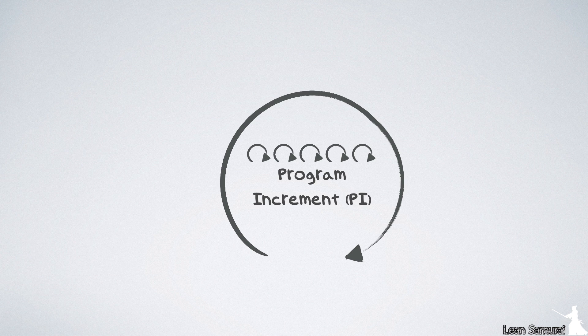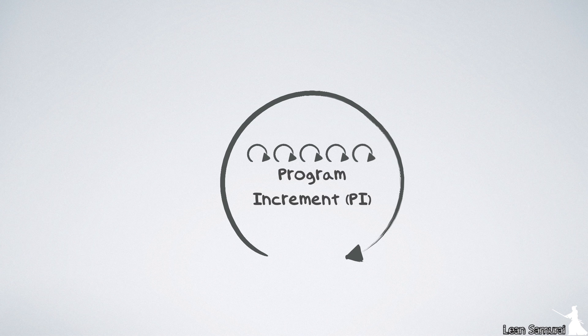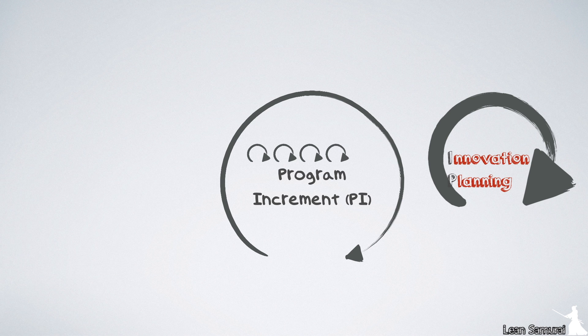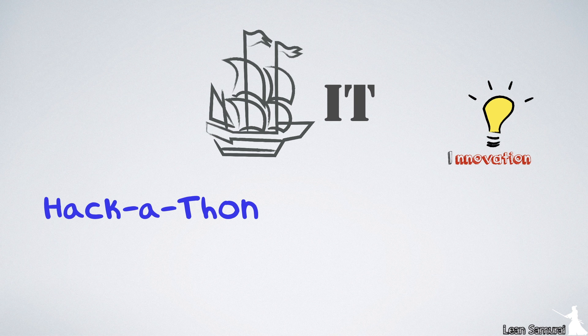We said each PI is five iterations long, but we've only planned four iterations. The final iteration is called an IP iteration, or innovation and planning iteration. The innovation part is the time for the teams to engage in creative ideas. It's time for shippy days or hackathons.